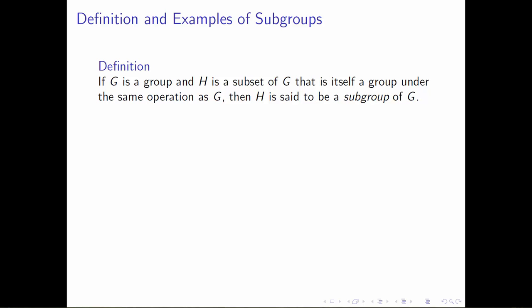Now with this definition in hand, let's take a look at some examples. We've seen before that the integers, the rational numbers, the real numbers, and the complex numbers are all groups under the operation of addition. And in fact, the integers, the rational numbers, and real numbers are subsets of the complex numbers — we could view them all as sitting inside the largest of these collections, which is the complex numbers. Therefore, by definition, the integers, rational numbers, and real numbers are subgroups of the complex numbers.